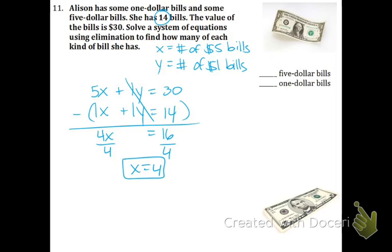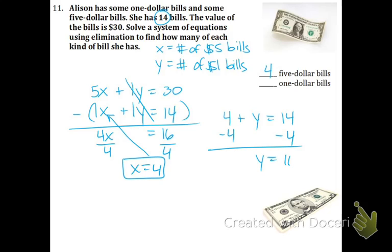The hard part is done — the easy part is coming. Take the 4 and plug it in for the x. So we have 4 plus y equals 14. Subtract 4 from both sides and you get y equals 10.